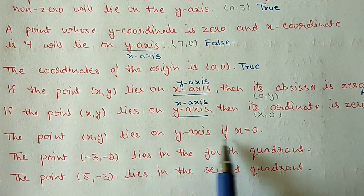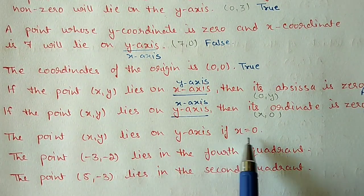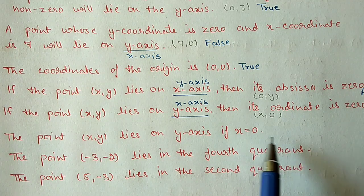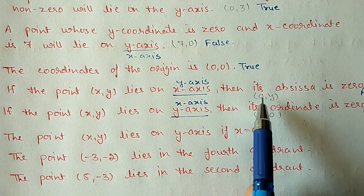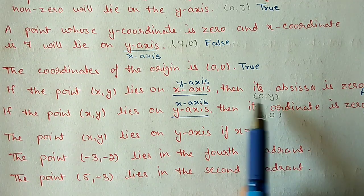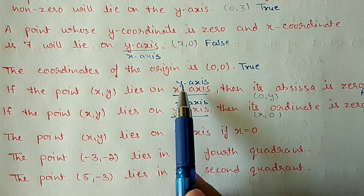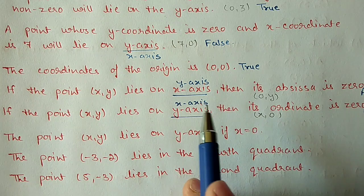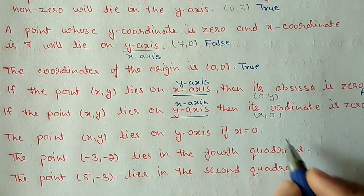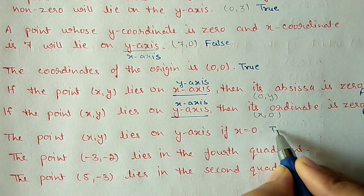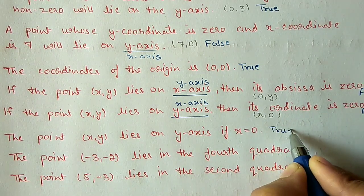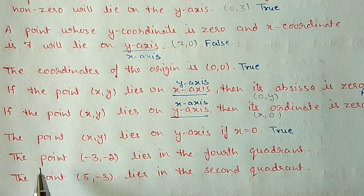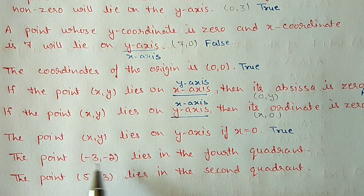Part f: the point (x, y) lies on the y-axis if x is equal to 0. If x equals 0, the point is indeed on the y-axis. So this is a true statement.